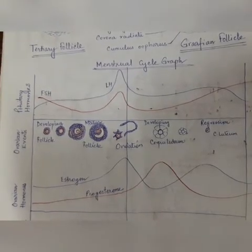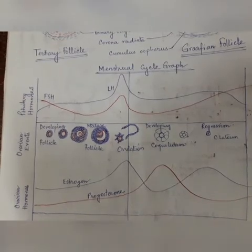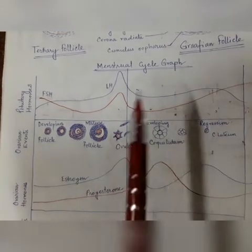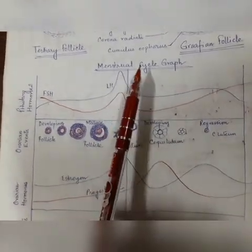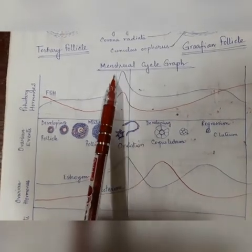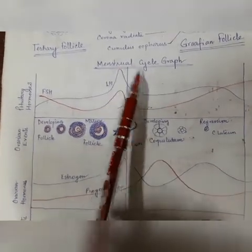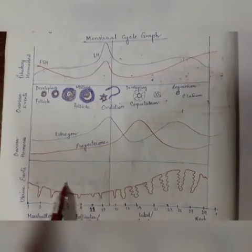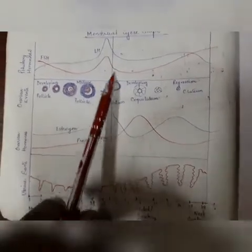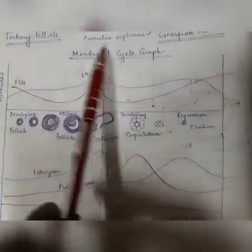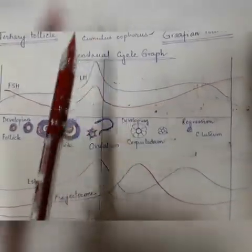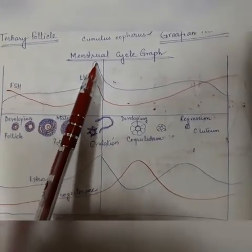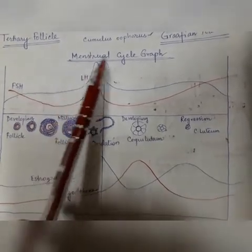Hello everyone. We have completed the portion of the structure of the ovary and oogenesis. Now, in this video, we will talk about the menstrual cycle. To study the menstrual cycle, we will study this process along with the entire graph. What is this term and where is it derived from? Menstruation is actually derived from a Latin word which is 'menses', meaning which occurs month-wise.